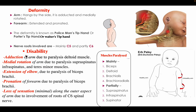The disabilities in Erb's paralysis include: loss of abduction of the arm due to paralysis of the deltoid muscle, supplied by the axillary nerve; medial rotation of the arm due to paralysis of supraspinatus, infraspinatus, and teres minor — supraspinatus and infraspinatus supplied by the suprascapular nerve, teres minor by axillary nerve; extension of the elbow and pronation of the forearm due to paralysis of biceps brachii, supplied by the musculocutaneous nerve; and loss of sensation along the outer aspect of the arm due to involvement of the C6 spinal root.